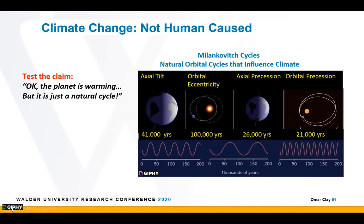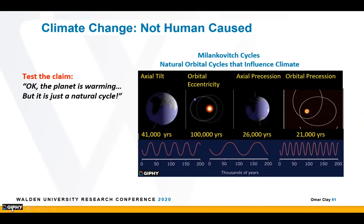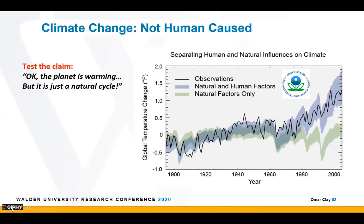Another common misconception: okay, maybe the planet's warming, but it's just a natural cycle. There are definitely natural cycles — the Milankovitch cycles, first discovered in the 1930s by a Serbian physicist. The time scale for most of these is 10 to hundreds of thousands of years long, and none of these are driving climate change today because we include them in all of our models. When we run models without including human terms — just natural climate cycles — the temperature would be going down slightly. But when we include the human factors, we can account for the increase in global average temperatures.